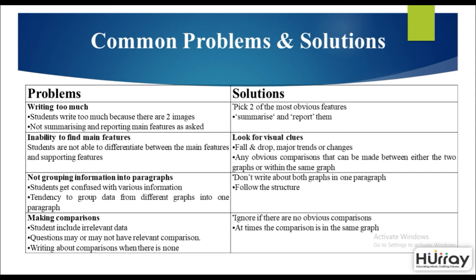The third problem is not grouping information into paragraphs. There is a tendency to mix data from different graphs into one paragraph — do not do that. Follow the structure strictly and take down points based on the paragraph structure discussed earlier. The fourth problem is making irrelevant comparisons. Sometimes questions may not have obvious comparisons, and forcing them will affect your coherence. Ignore comparisons if there are none, and note that comparisons sometimes exist within the same graph.